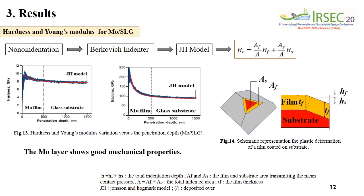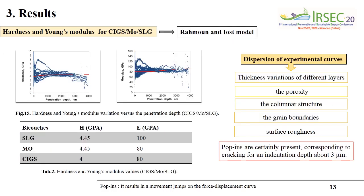The ZH model was used to calculate the film hardness when the indenter penetration is affected by the substrate. The MoSe layer shows good mechanical properties. The Raman-Doerner model was used to calculate hardness and Young's modulus for a multi-layer system.